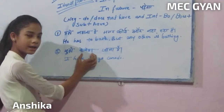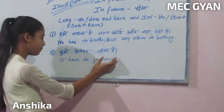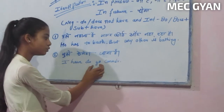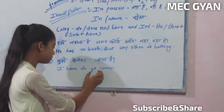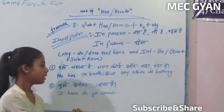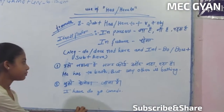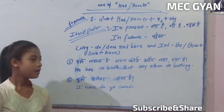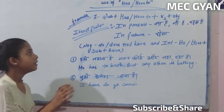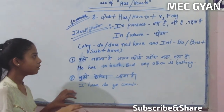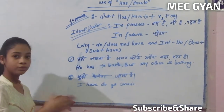Mujhe Canada jana hai. I have to go to Canada. In 'has to', we have to go.